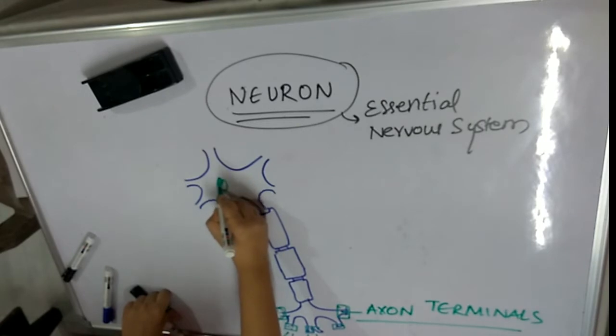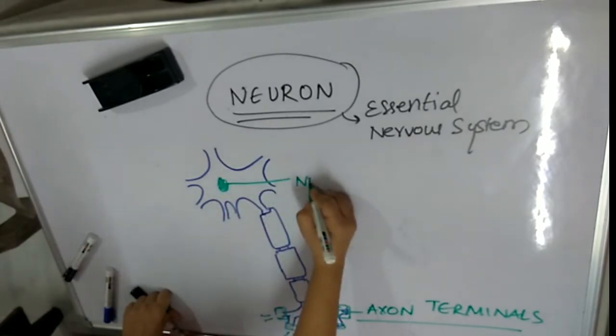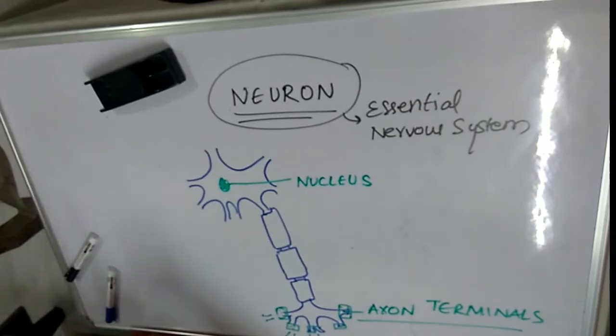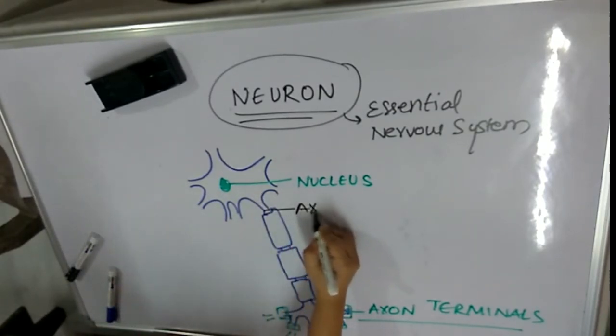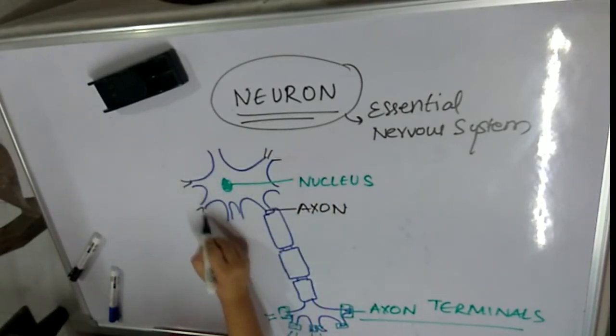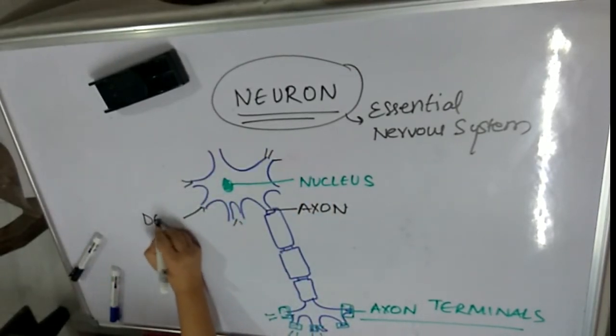Let's look back at the structure of a neuron. This is the nucleus of the neuron, and this is the axon unit. These endings you're seeing here are the dendrites.